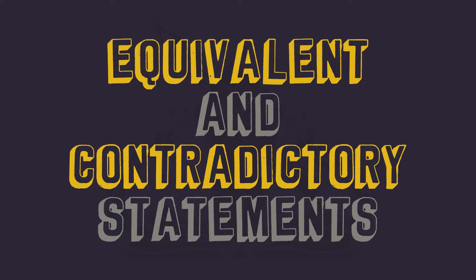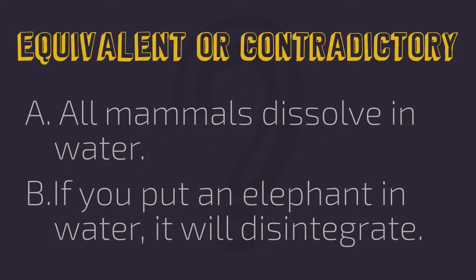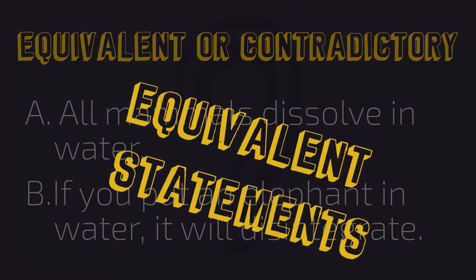Let's look at the problems we missed the most. Statement A: all mammals dissolve in water. Statement B: if you put an elephant in water, it will disintegrate. Elephants are mammals, so there we have our first link between the two sentences. If a claim is being made about all mammals, that claim will also apply to all elephants. Both sentences claim that the subject disintegrates in water. That claim is false, so both claims are false. In this way, they are equivalent statements — they're both false, but equivalent nevertheless.